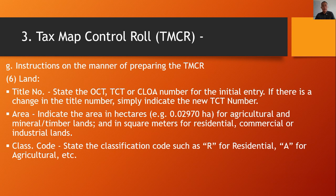For the land title number, state whether it is an OCT, TCT, or CLOA number for the initial entry; if there is a change in title number, simply indicate the new TCT number. For the area, indicate hectares for agricultural, mineral, or timberlands, and square meters for residential, commercial, or industrial lands. For the classification code, state R for residential, A for agricultural, and the appropriate code for other property classifications.